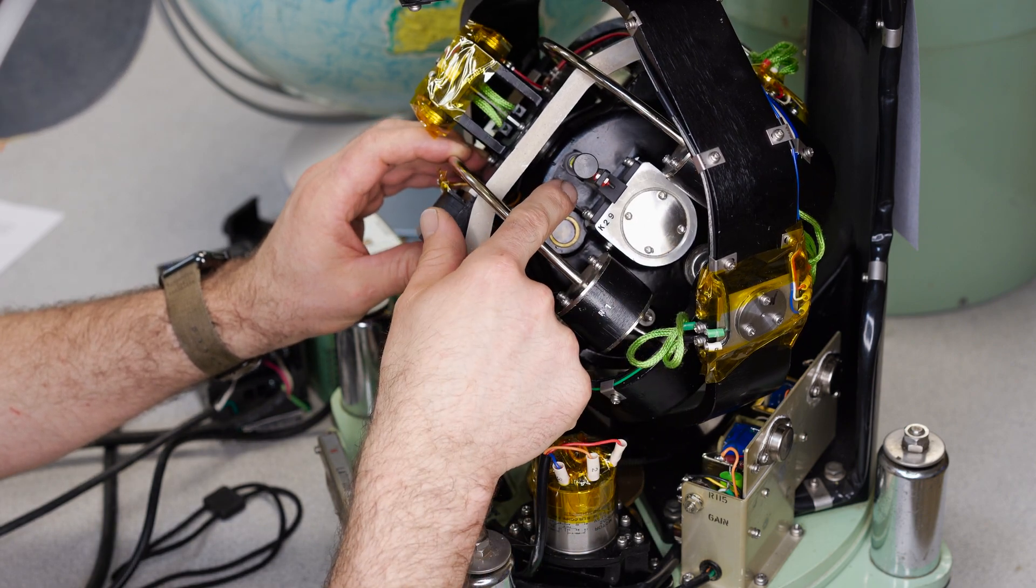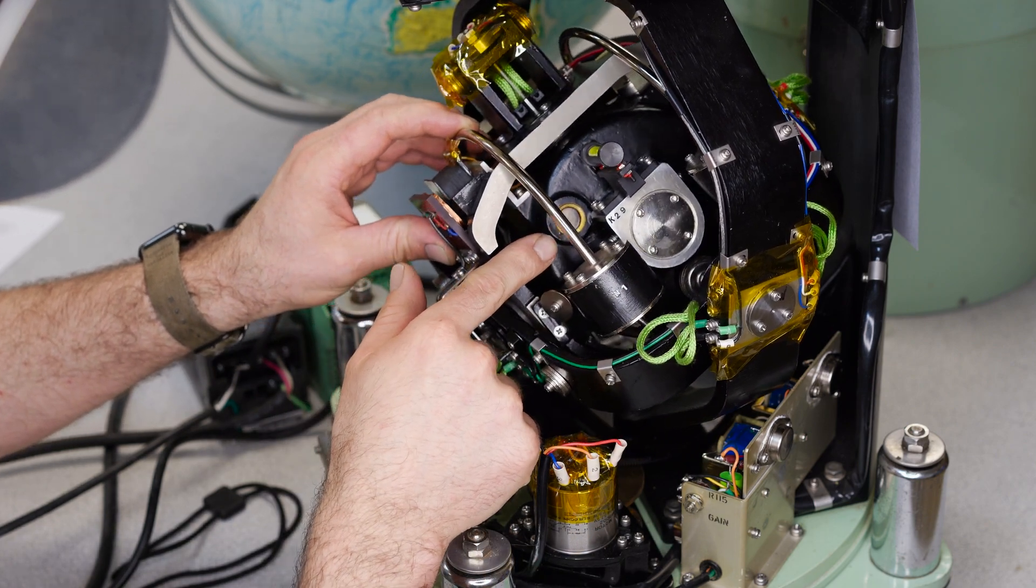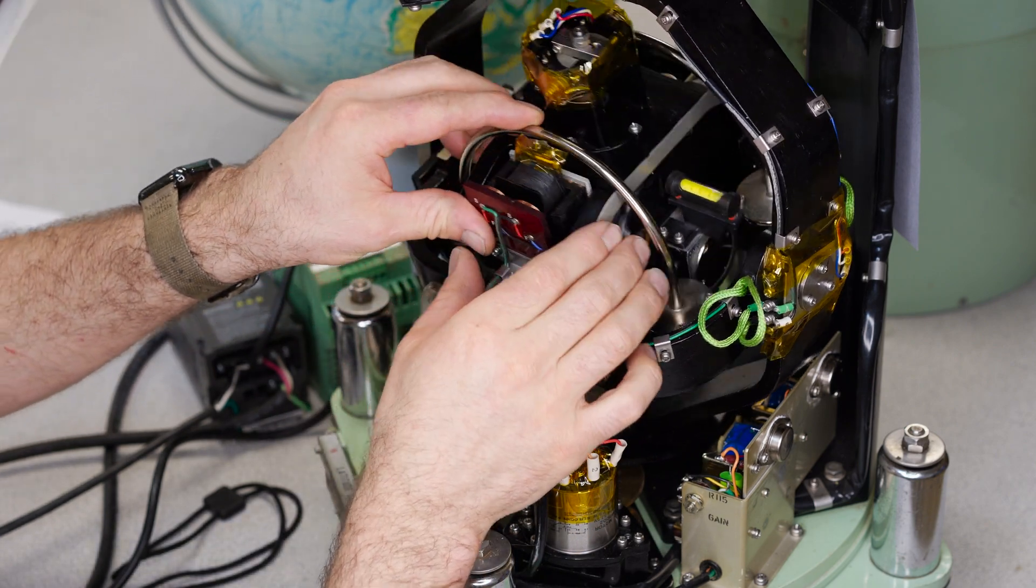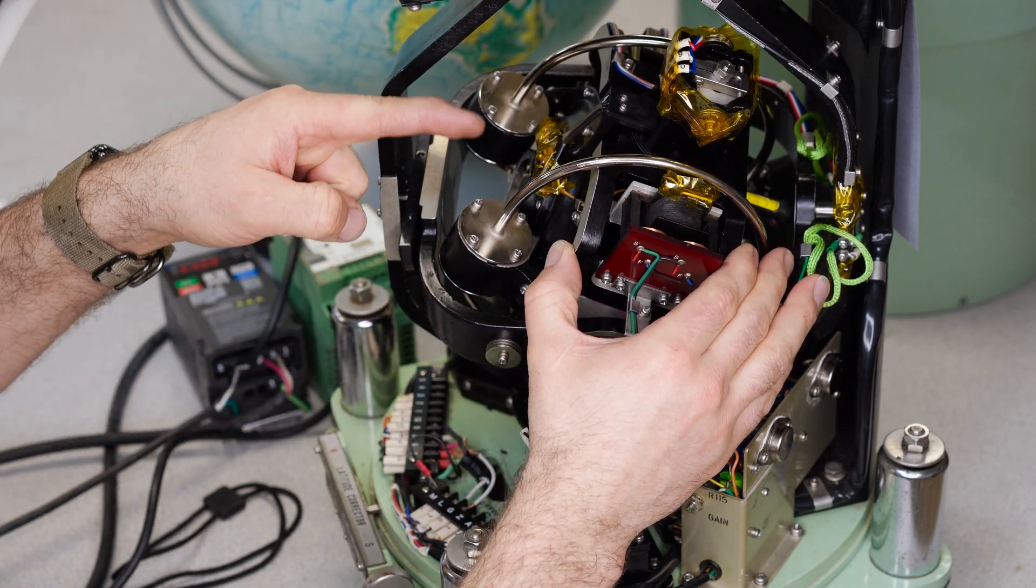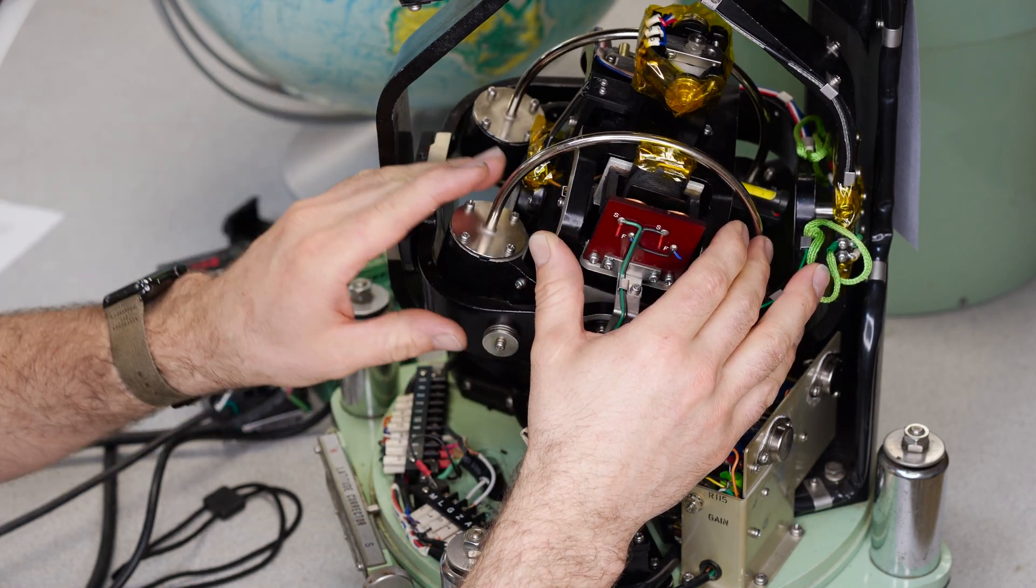At the center of the gyrocompass is a gyroscope. This one is a three-phase motor with a heavy brass rotor that spins clockwise as viewed from the north end at 12,000 RPM.